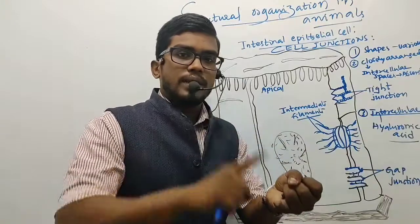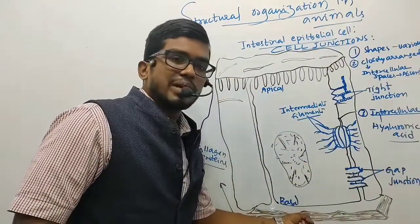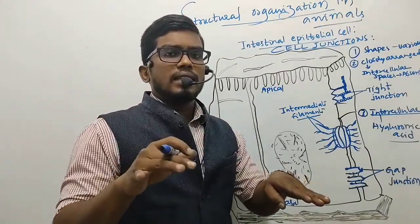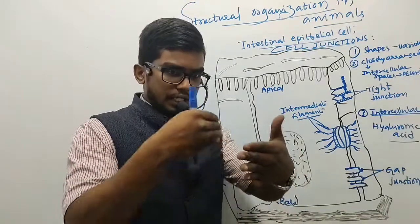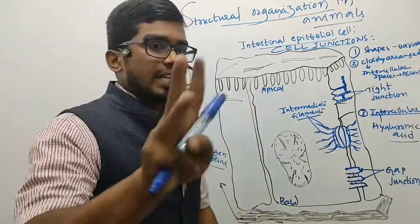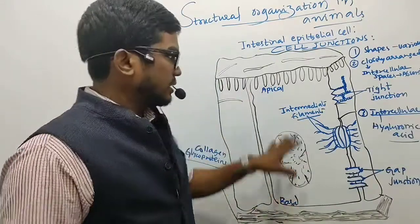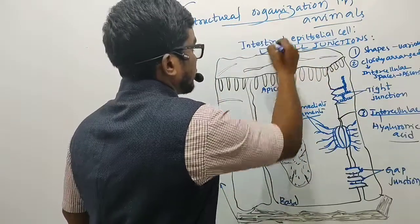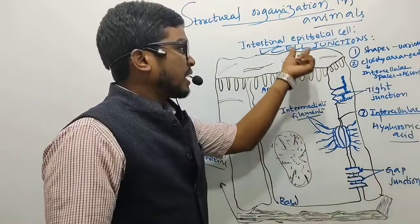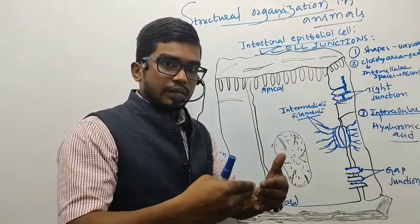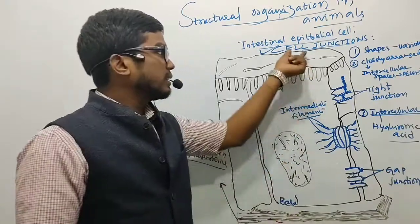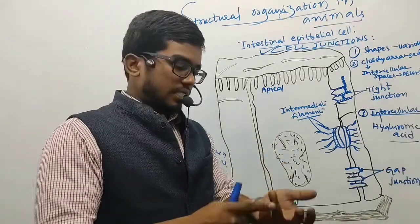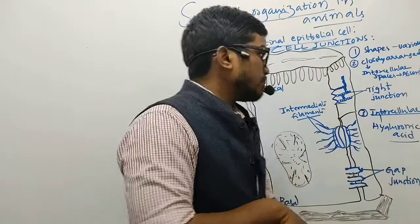Most of the epithelial tissues lie on the basement membrane. Furthermore, the neighboring epithelial cells are held together by three types of intercellular cell junctions, as represented in this diagram. These intercellular cell junctions — connections between cells that allow interaction — are of three types: tight cell junctions, adhering cell junctions, and gap junctions.